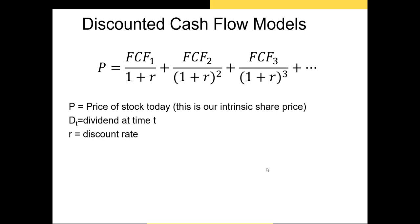Now let's take a look at our most general discounted cash flow model. In this model we estimate our free cash flows for each of the next several years and discount them back to the present. The discounted value will be the intrinsic value of the firm's cash flows — that P represents the expected intrinsic price of the stock today, assuming it is fairly valued.